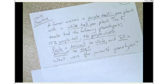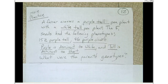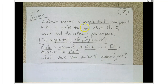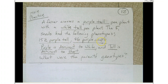Now we're going to do a more realistic problem. A farmer crosses a purple tall plant with a white tall pea plant. The F1 seeds had the following phenotypes: 152 purple tall, 46 purple short. Purple is dominant to white, tall is dominant to short. What were the parents' genotypes? If you want to try to answer this question, go ahead and stop at this time.